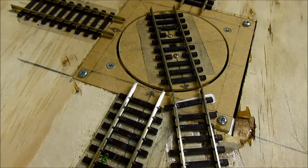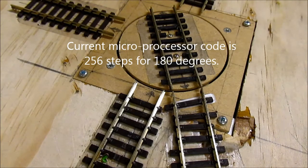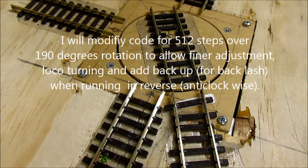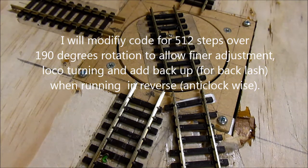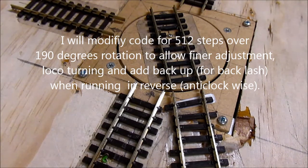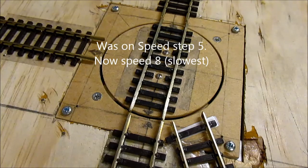At the moment there's 256 steps for the 180 degrees, and I need to make it 512 steps for say 190 degrees so that I can arrange backlash. Speed step 8 is the slowest the servo mate can run at.